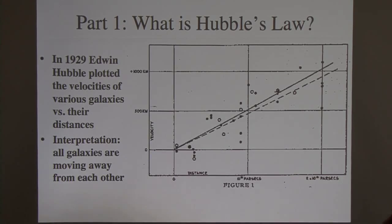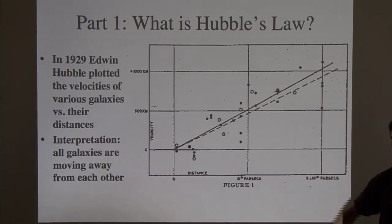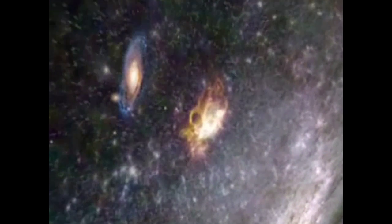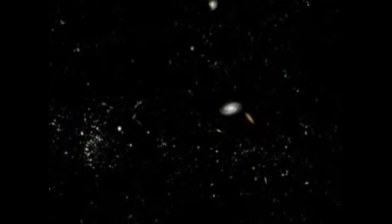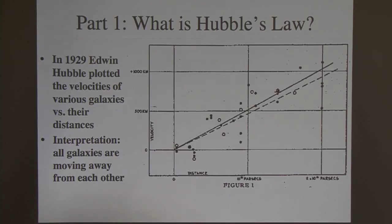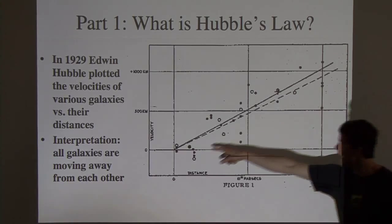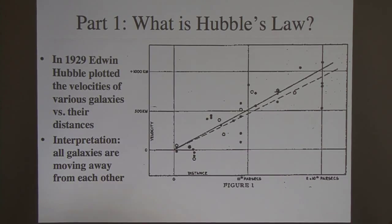So 10 to the sixth, that's a million. These are megaparsecs. So what Hubble was doing is he was looking at the velocities of various galaxies and comparing that to how far away they are from us. Here's what his data looked like. You see all the points here. And there's a lot of scatter to the data. But he was able to fit some sort of line to this.